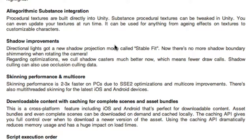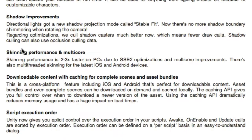They have shadow improvements. Directional light has a new shadow projection mode called Stable Fit — no more shadow boundaries shimmering when rotating the camera. Regarding optimizations, shadow casters are culled much better now, which means fewer draw calls. Shadow culling can also use occlusion culling data.